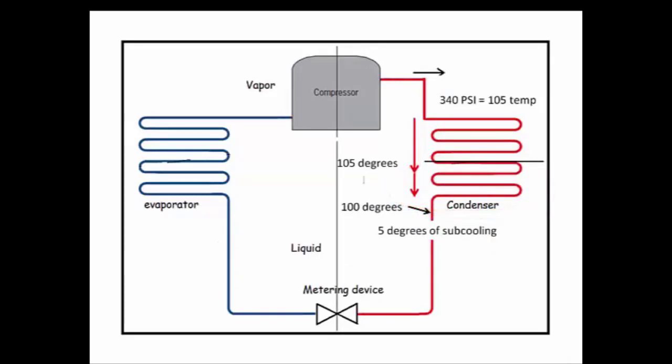But what if it goes the other way? What if we have too much refrigerant in the condenser and the system is overcharged? What will our numbers look like then? Here's a hypothetical of 415 psi, which converts to 120 degrees saturation temperature. We measure our liquid line temperature and it's 103 degrees. That means we have 17 degrees of subcooling.